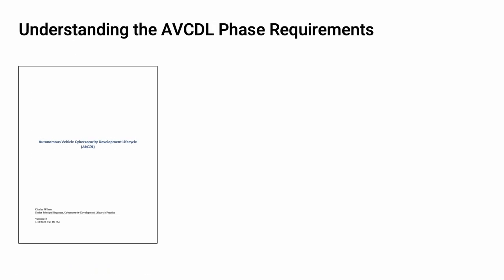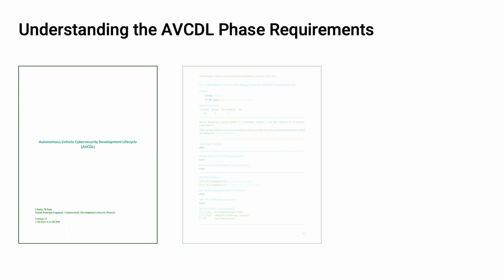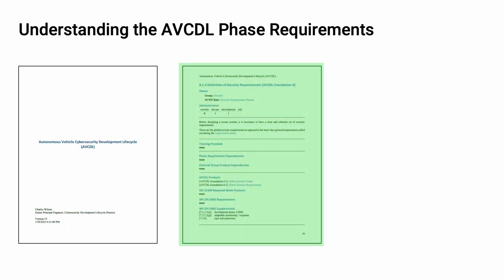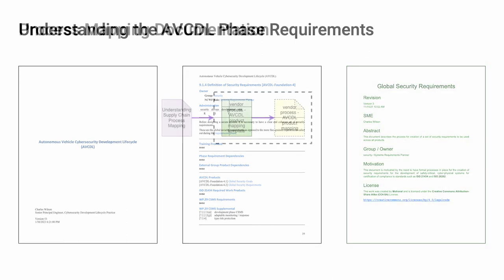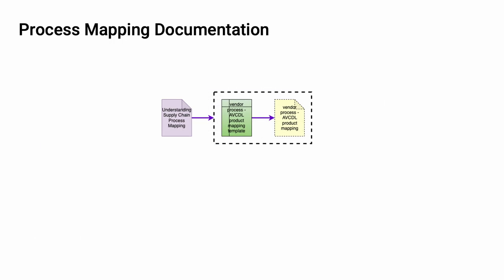In order to create the process mapping, it's necessary that the supplier review the AVCDL documentation. The starting point for this is the AVCDL primary document itself, which provides the overview of the cybersecurity development lifecycle and establishes the framework upon which both the phases and the phase requirements exist. Within the AVCDL primary document, each of the phase requirements is listed. For each phase requirement, summary information and a list of secondary documents elaborating on the material is provided. The secondary documents contain detailed information as to the processes expected to take place in order to satisfy the phase requirement.